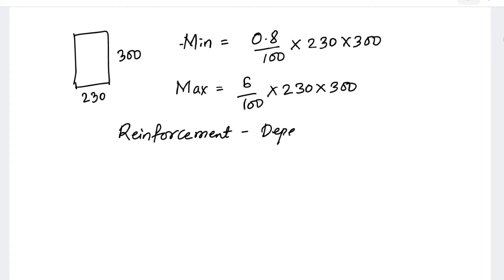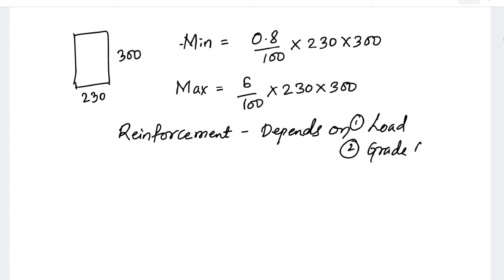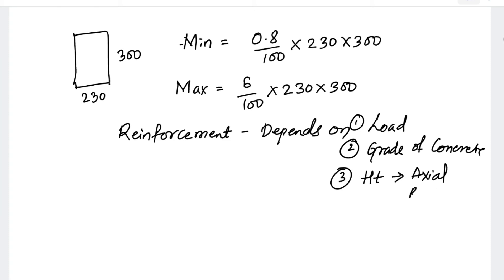The actual reinforcement depends on: first, the load on the column; second, the grade of concrete; and third, the height of the column — that is, whether it is an axially loaded column, a uniaxial column, or a biaxial column. Based on these factors, we will determine what the actual reinforcement percentage should be.